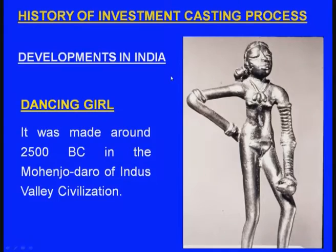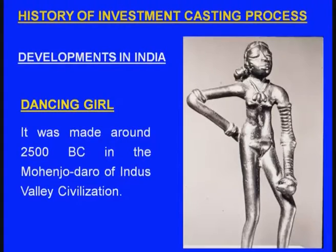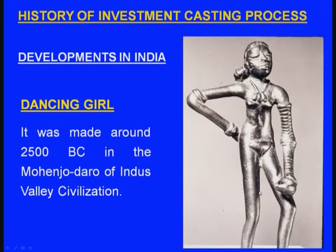Regarding developments in India: this process was in use even during 2500 BC. A famous dancing girl bronze statue was made with several artistic features excellently cast using investment casting — a wax model of the dancing girl was made, kept inside a sand mold, the wax drained out after heating, and molten bronze was poured. This bronze dancing girl is still in Mohenjo-daro, now in Pakistan.